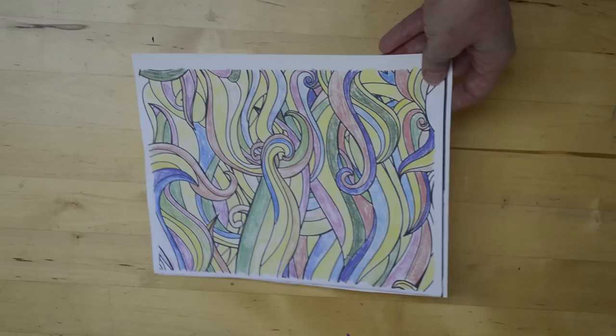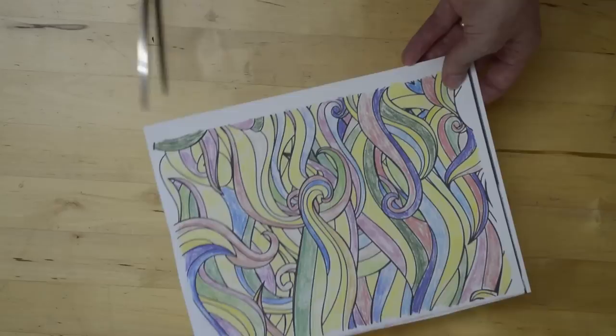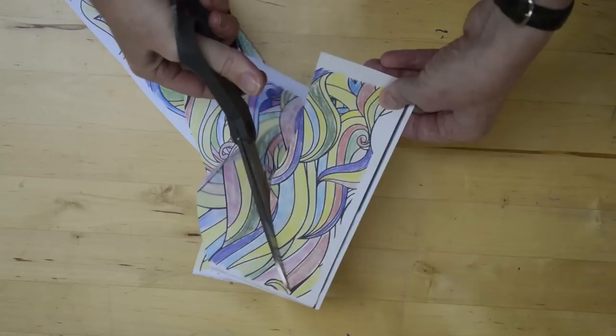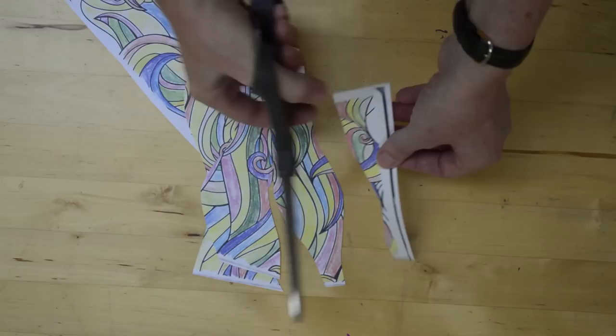You start with your coloring book page and you'll want to cut it into strips or curves or whatever really makes sense to you. I kind of matched the curviness of the design on the page. So it doesn't really matter how you cut it.